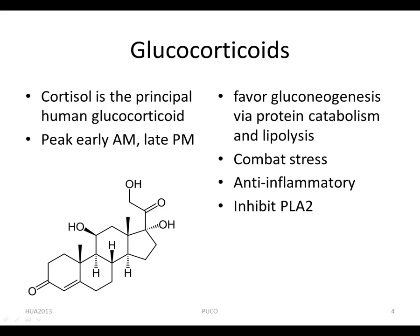Glucocorticoids favor gluconeogenesis through increasing amino acid uptake by the liver and kidney and elevating activities of gluconeogenic enzymes. They stimulate protein catabolism and lipolysis, thereby providing building blocks and energy needed for glucose synthesis. By raising plasma glucose level, glucocorticoids provide the body with energy required to combat stress caused by, for example, trauma, fright, infection, bleeding, or debilitating disease.